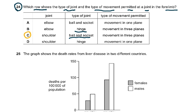The shoulder allows movement in three planes — you can move your arm front and back, side to side, and 360 degrees. The elbow is a hinge joint but it only allows movement in one plane. So ball and socket for elbow is wrong, and the answer is C.